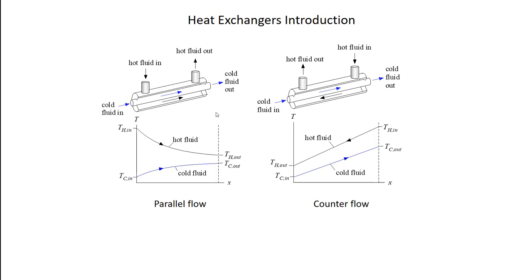In a parallel flow configuration, the hot fluid comes in on the left and flows through the annular space from left to right, and the cold fluid also comes in on the left and flows through the tube from left to right — both flows going in the same direction. If you re-plumb it so the hot fluid comes in on the right and flows from right to left, that's 180 degrees from the parallel case, and now you have a counter flow heat exchanger. The behavior of these two heat exchangers under most conditions is about as different as two heat exchangers can be.